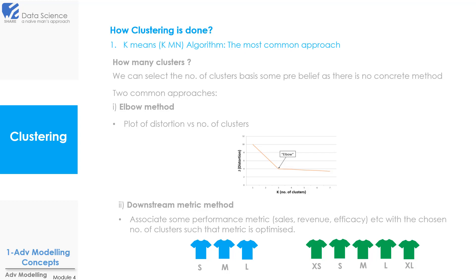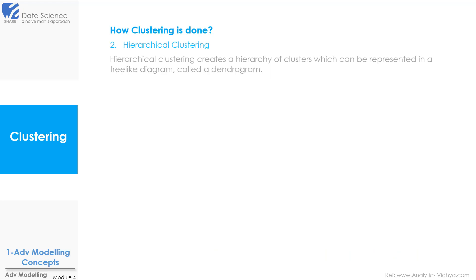Our next method is hierarchical clustering. In this approach we create a hierarchy of clusters which can be represented in a tree-like diagram called a dendrogram. There are two common approaches for it: first is agglomerative clustering which is most commonly used, and then divisive hierarchical clustering.